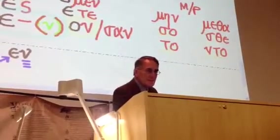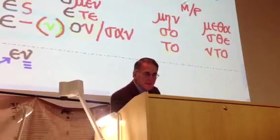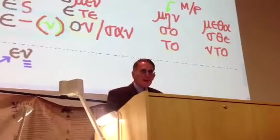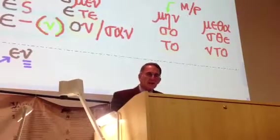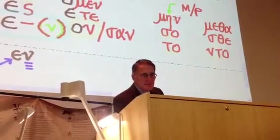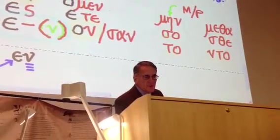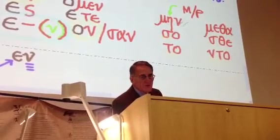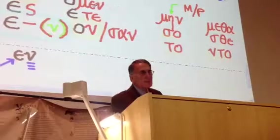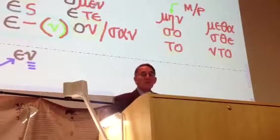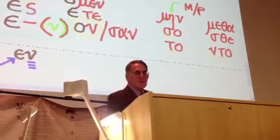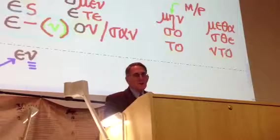Places where sometimes people get into trouble is that they forget that this is a main — a long eta, long e — and they sometimes will confuse it with a men ending. This is the first singular; the men ending would be the first plural ending. So: main, saw, tau, metha, stha, un, tau.